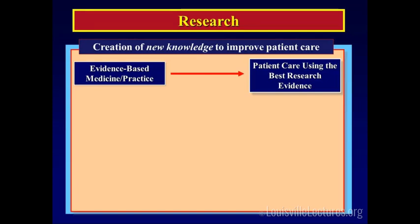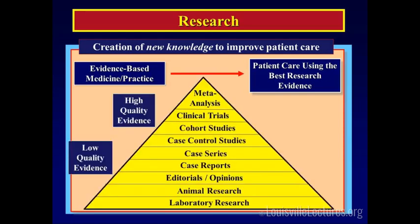In the literature, there are different ways to look at the evidence, but mostly you see this pyramid of evidence where we consider high-quality evidence to be the prospective, randomized, double-blind clinical trial. Moving down the pyramid, you have laboratory research, then animal research, and going into research using human subjects — that would be defined as clinical research.